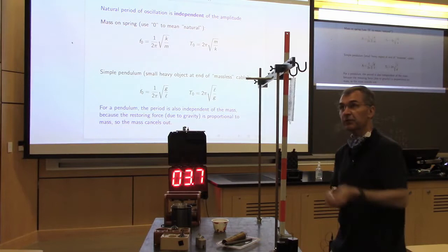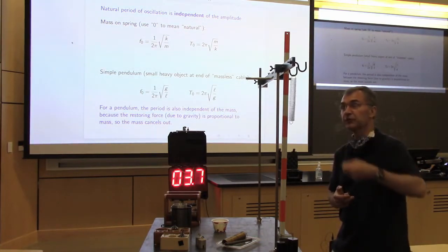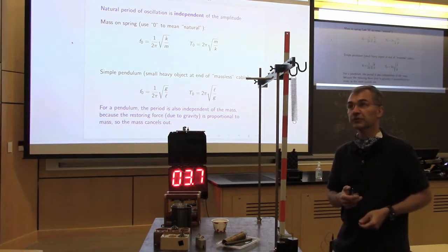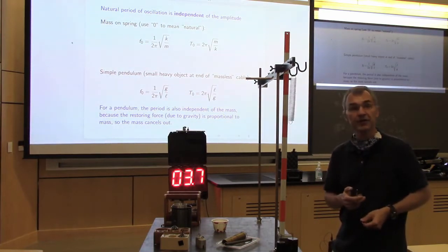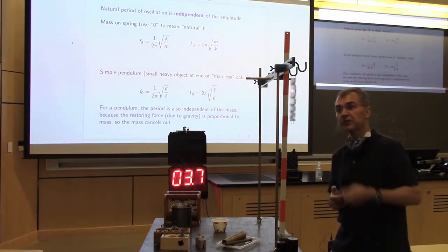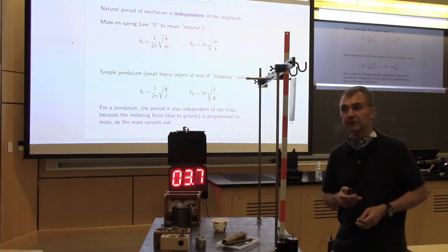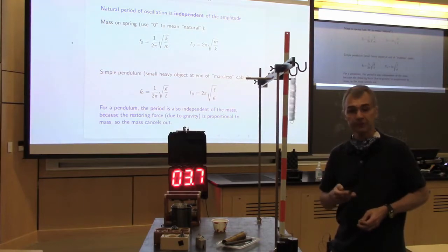If we make the mass smaller, that makes the oscillation period shorter and the frequency faster. The frequency is the reciprocal of the period. Period is measured in seconds; frequency is measured in cycles per second. Making the mass smaller increases the oscillation frequency and shortens the period of oscillation.